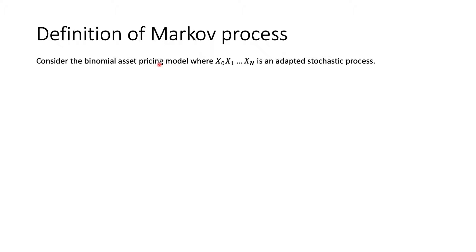First we will talk about the definition of a Markov process. Consider the binomial asset pricing model where the sequence x0, x1 up to xN is an adaptive stochastic process. Consider x0, which is a random variable, but since we're at time 0, it's not random, so it's actually null.